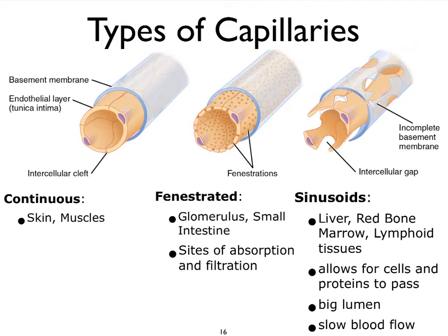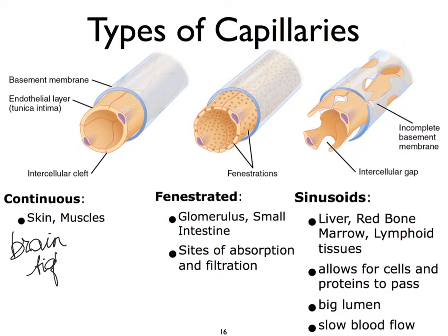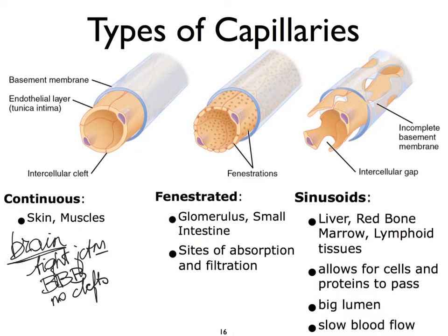We see continuous capillaries especially in skin and muscles — skeletal muscles, that is. But I should add the brain as well. In the brain, we actually have tight junctions between the endothelial cells — remember the blood-brain barrier? So we're not going to see these clefts present, or very, very few in the brain, if any at all. The continuous capillaries are present there as well, but with no intercellular clefts.